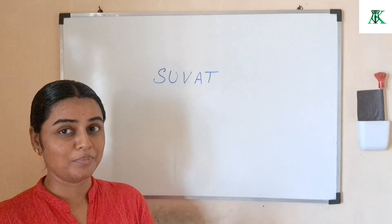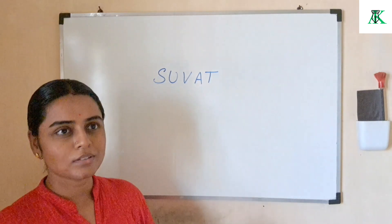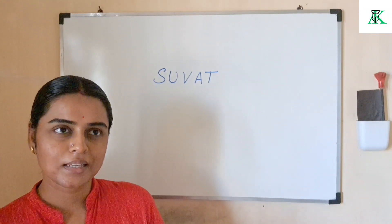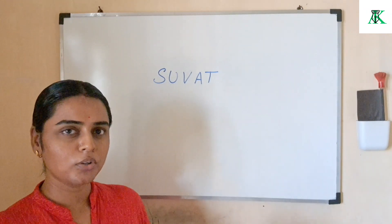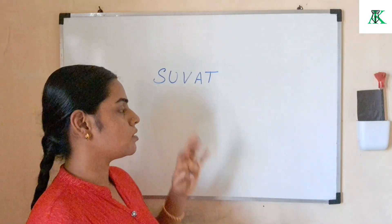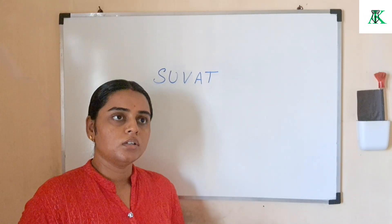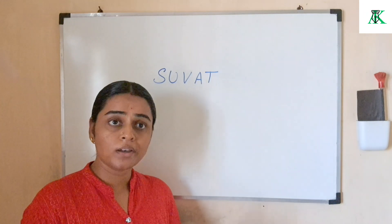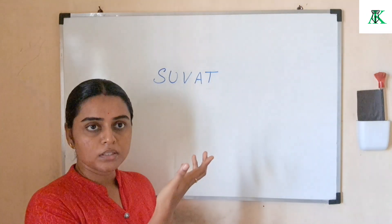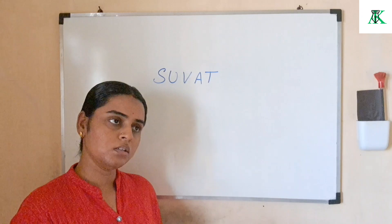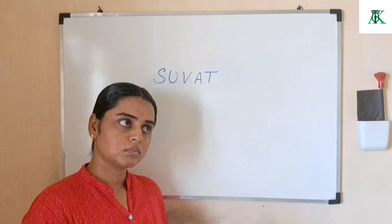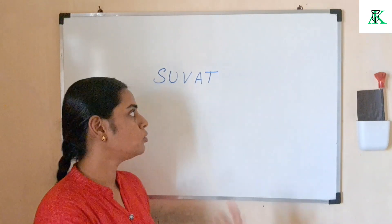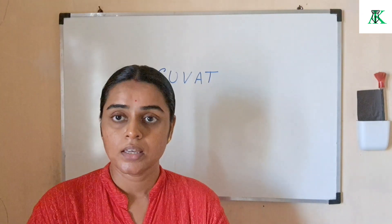Some of you watching may ask why capital T for time, capital U, capital V — I've written them in capitals just to help you understand; you can write them in small letters too. So what Newton told us was: if you want to describe the motion of any object around you, you have to use these parameters to explain that motion.